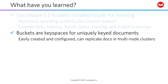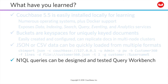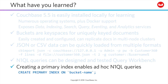Buckets are key spaces for uniquely keyed documents, which can be replicated to additional nodes for durability. Either JSON or CSV data can be quickly loaded from multiple different underlying formats, generating unique document keys in the process. For development and testing, N1QL queries can be built and run in either the query workbench, or you'd also find a command line tool called CBQ. Due to our memory-first architecture, a primary index must be built to perform ad hoc queries, which may rely on a full bucket scan for their results. The syntax to create or drop primary indexing is straightforward.